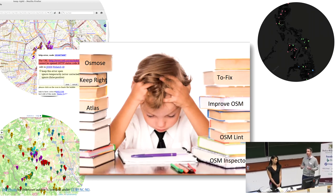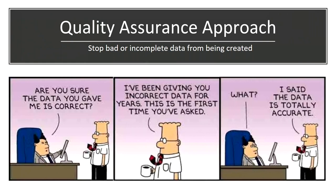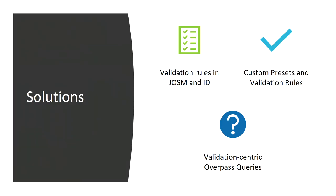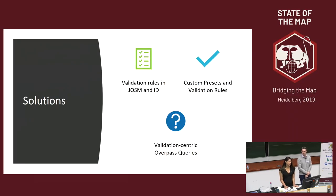It would be difficult for the new user to identify the right place in the wiki or a different training resource to fully understand the tagging schema and correct workflows for mapping. So our team's approach has been to stop bad or incomplete data from being created or uploaded in the first place. This can help give immediate feedback to new mappers and give them the confidence they need to ensure they're contributing quality data. We have added to the validation rules in OSM and ID, and we'll show you how you can build upon the existing validation frameworks. We've also provided an easy way to create guided custom presets and validation rules with an application called Map Rules. Finally, we wrote validation-centric overpass queries to only pull in data that has issues.